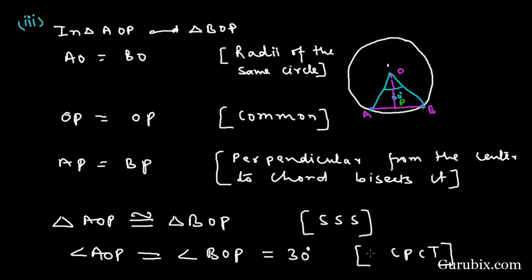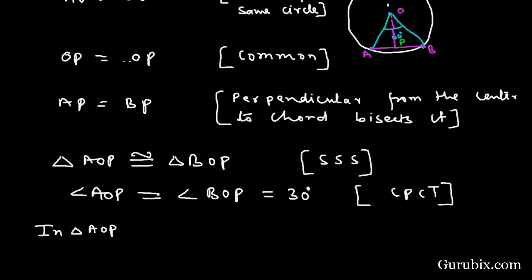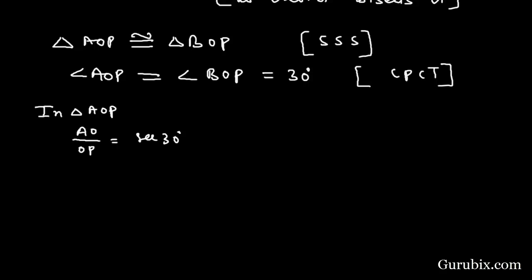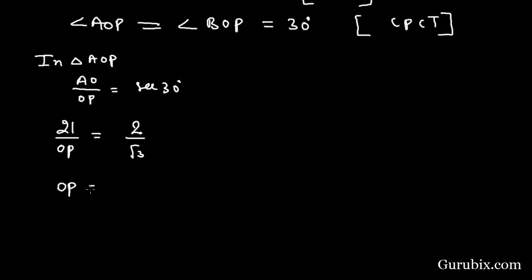Now we move to triangle AOP. In triangle AOP, the angle at O is 30 degrees. We shall find the ratio of AO over OP, which is hypotenuse over base, meaning sec theta where theta is 30 degrees. AO is 21 centimeters (the radius). OP is unknown. Sec 30 degrees equals 2 over √3. Therefore, OP equals 21√3 over 2 centimeters.